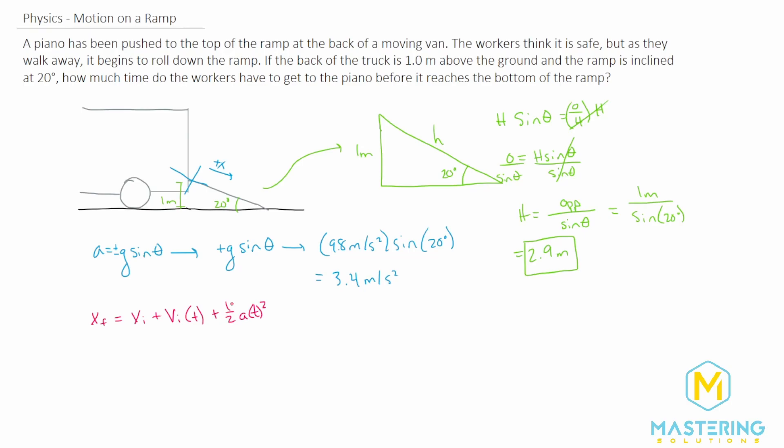In this case, this is the one that I think is pretty easy to use. The x initial we'll say is zero because we'll say right where it started is the initial x, so that goes away. The initial velocity, it's starting from rest and then it starts to roll down the ramp, so this is also zero. So what we're left with is x final equals one half a t squared.